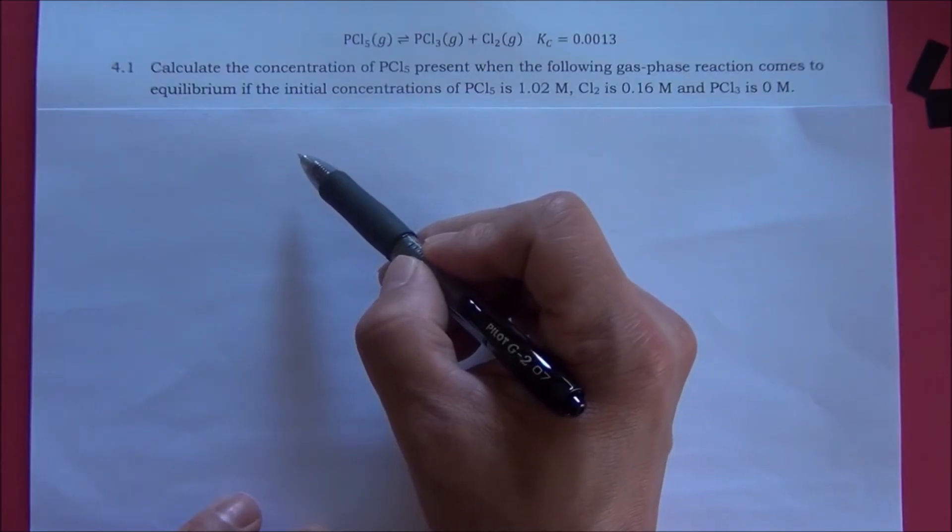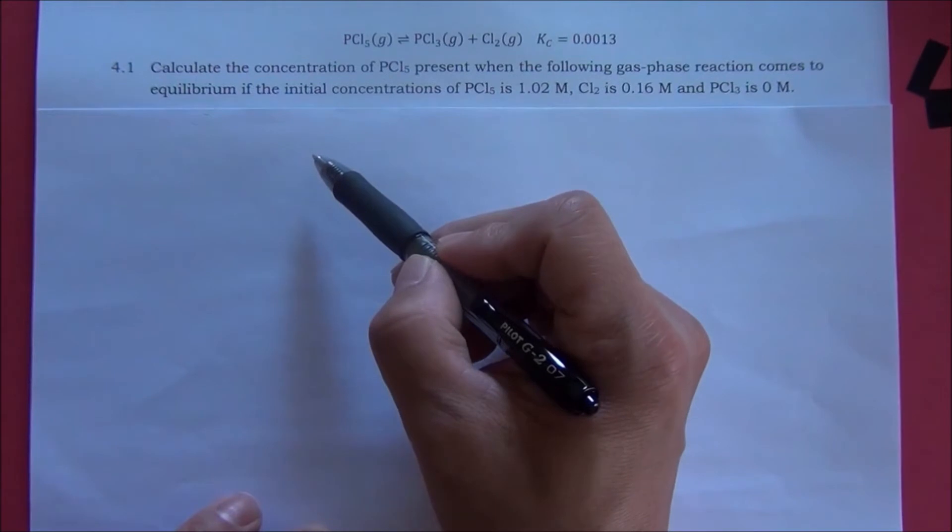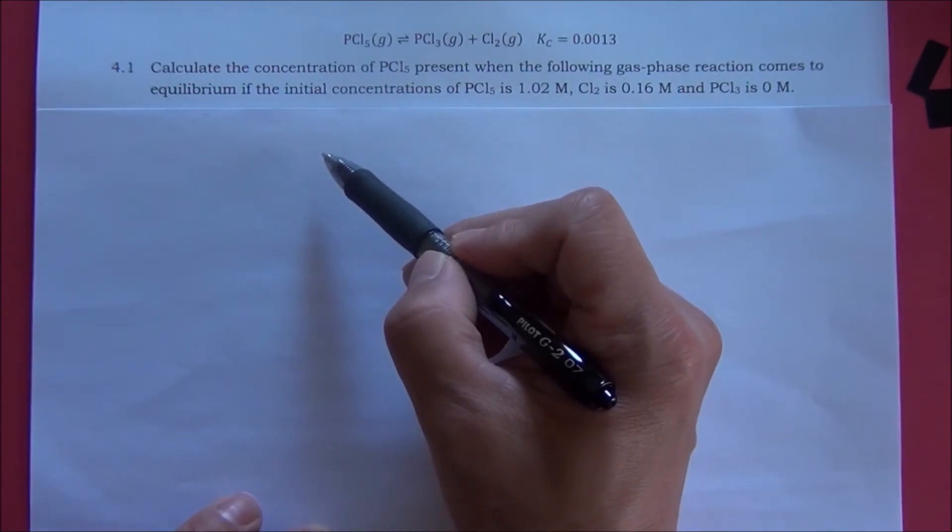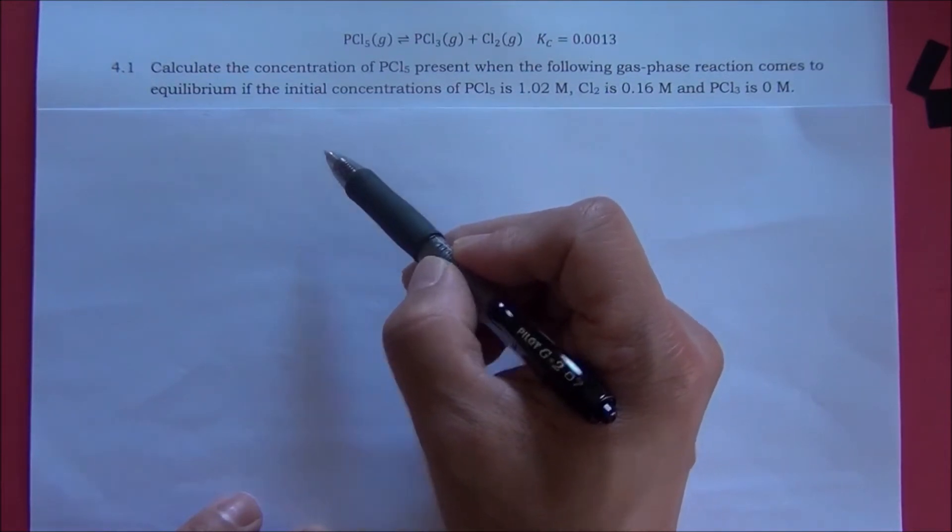The standard procedure for an equilibrium calculation problem is to set up an ICE table and use the definition of equilibrium constant to set up an equation. Let's read the problem together.